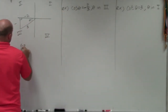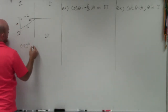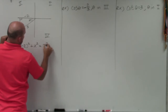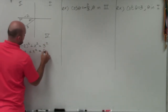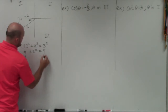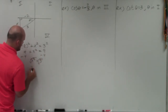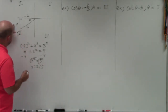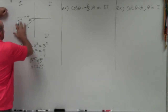To find the opposite side, I'll use the Pythagorean theorem. So: negative 2 squared plus x squared equals 3 squared. That becomes 4 plus x squared equals 9. Subtract 4 from both sides: x squared equals 5. Taking the square root, x equals plus or minus the square root of 5. Since we're going downward in the third quadrant, it has to be negative — so x equals negative square root of 5.